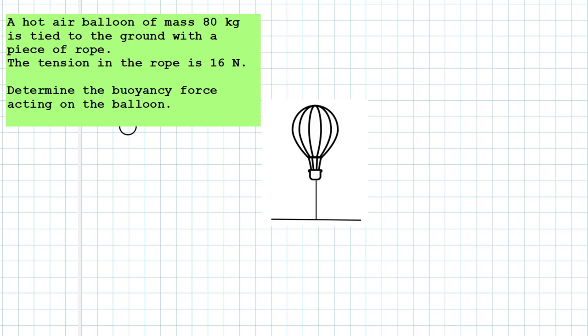A hot air balloon of mass 80 kilograms is tied to the ground with a piece of rope. The tension in the rope is 16 newtons and we have to determine the buoyancy force acting on the balloon.